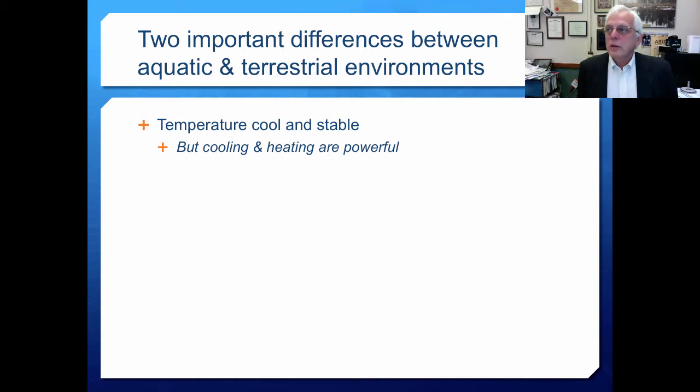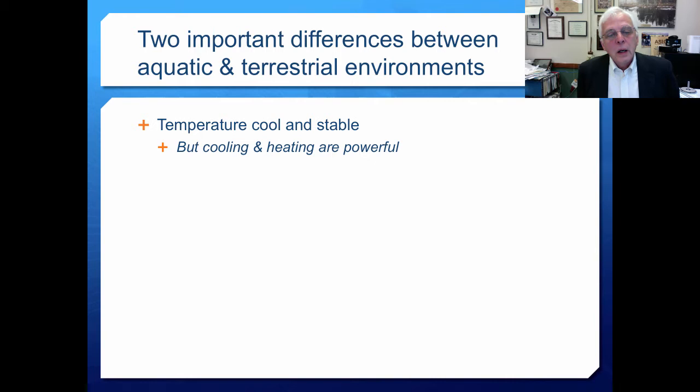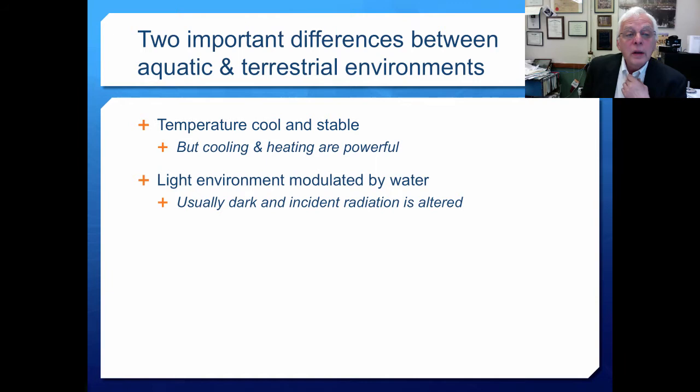There are two important differences between aquatic and terrestrial environments. First, in an aquatic ecosystem the temperature is pretty cool and stable - wide temperature swings are moderated, and this is due to the specific heat and also the heat of vaporization of water. Cooling and heating, however, are very powerful, as you know if you've ever stayed too long swimming in a cool lake.